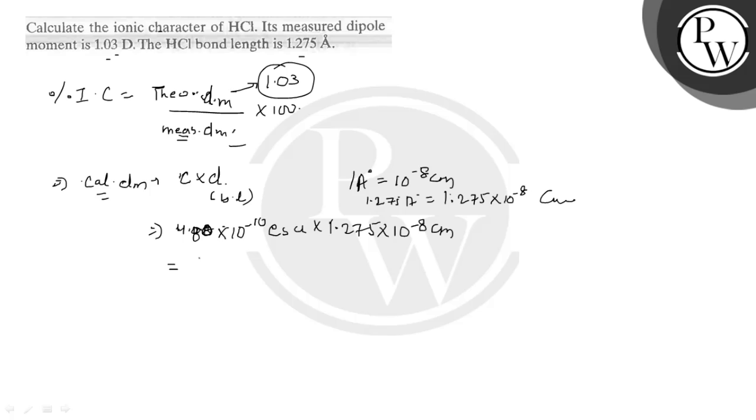If we calculate this, 6.096 ESU centimeter will come. And what is ESU centimeter? ESU centimeter is equal to 1 debye.